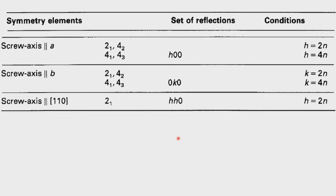We can consider screw axes parallel to a, parallel to b, and parallel to [110]. Whenever the screw axis is parallel to a given direction, only that direction is affected: for screw axis along a, h00 with h = 2n present; for h = 4n in certain crystal systems; for screw axis along b, 0k0 with k even or k = 4n present. Screw axis parallel to [110] is possible in tetragonal systems where a = b, and one can have a 2₁ screw axis along [110]. These crystal systems can be ideally identified based on these systematic absences.